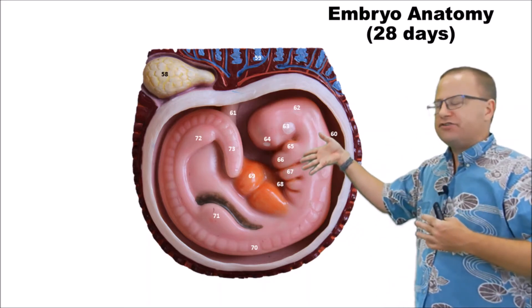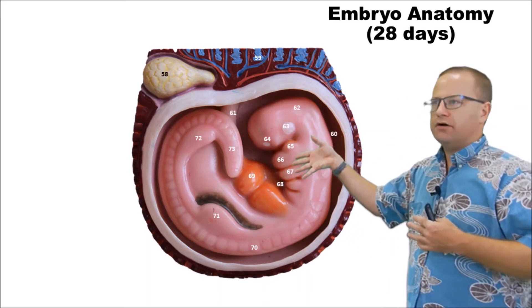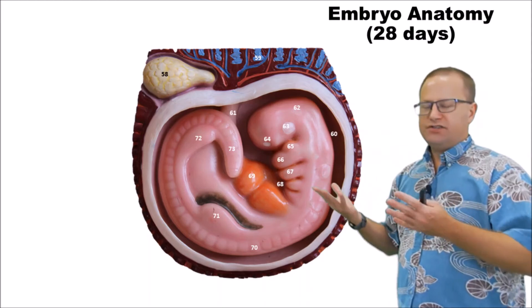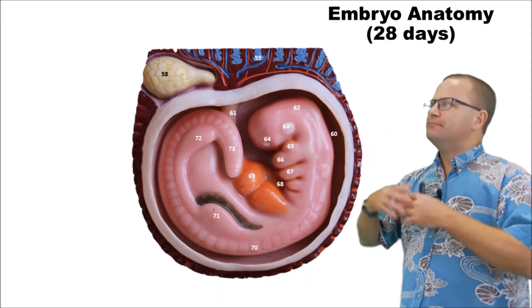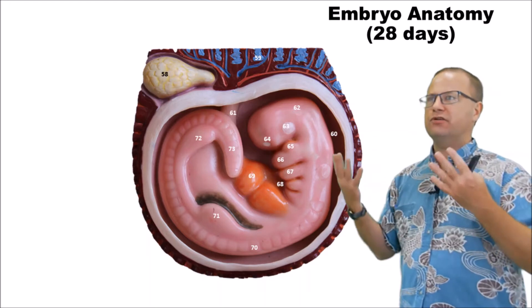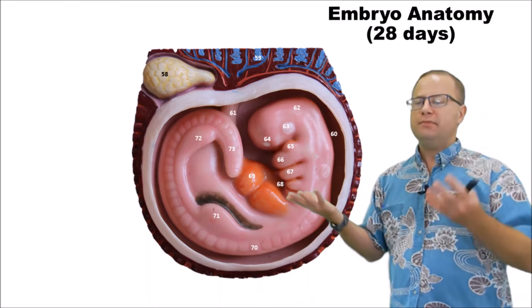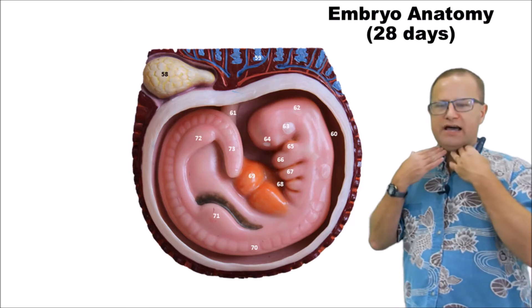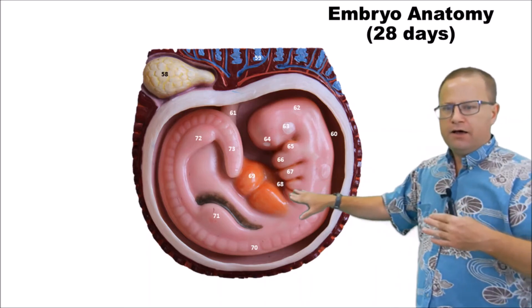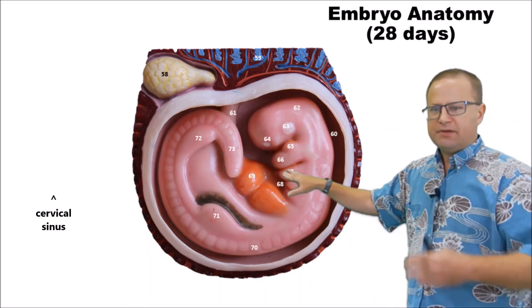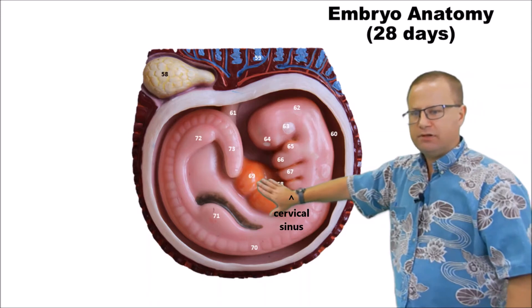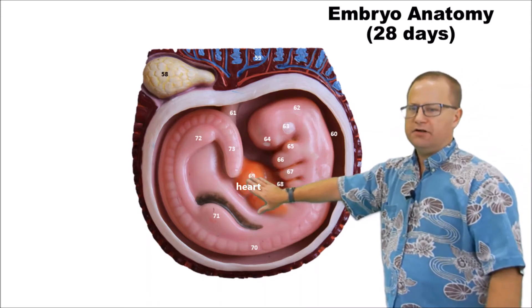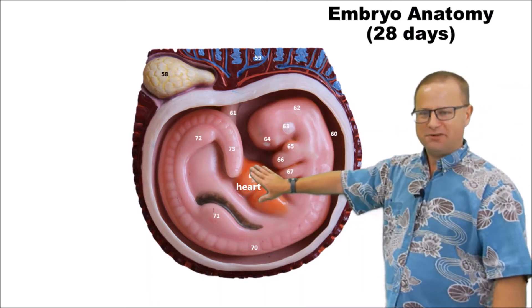Underneath that we have the mandibular arch — that will become the bottom jaw — and underneath that we have the hyoid arch, so that will become the hyoid bone. These right here are actually called branchial arches or pharyngeal arches, and branchial means gills. So in lower vertebrates like fish, these actually go on to become gills, but in humans they go on to become the upper and lower jaw as well as the hyoid bone. Now underneath that you can see something called the cervical sinus, and just below that this area is probably the heart — and the heart is sort of outside the body right now.